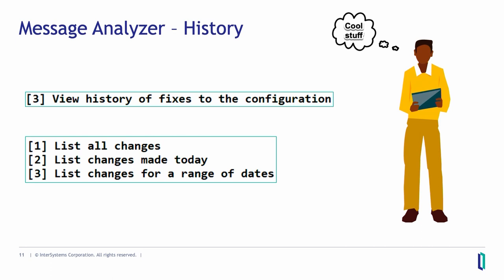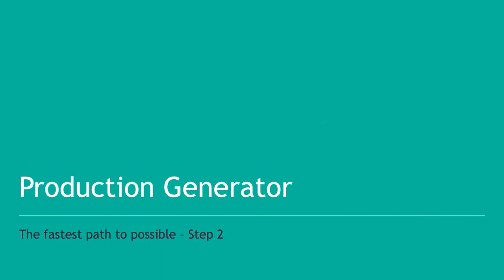The next step is creating the production — business services, business processes, business operations, rules, data transformations, and so on. We can do this automatically for you if you already have a list of your source systems, target systems, incoming messages, outgoing messages, and which schema you plan to use. This is the production generator. It needs one file with information about your system and a configuration file defining how to name the components.